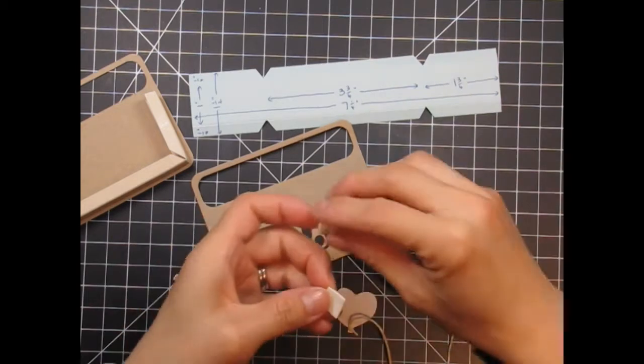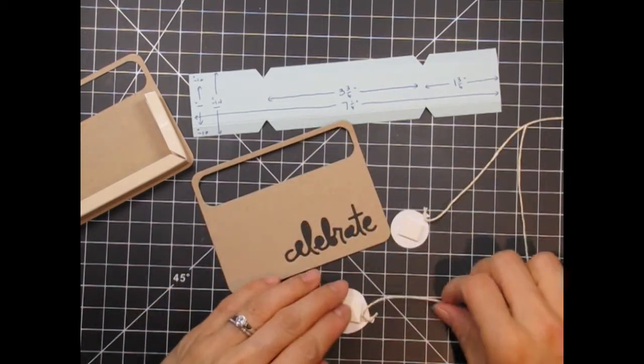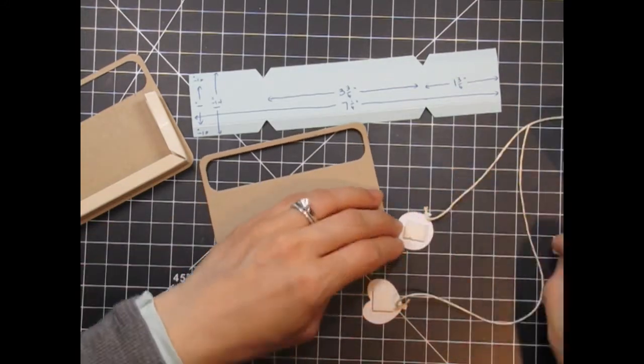I'm going to adhere these balloons to the box with some foam tape and I'm also going to add a dab of glossy accents to the back of each knot. This way the twine will never fall off the balloon or the box.